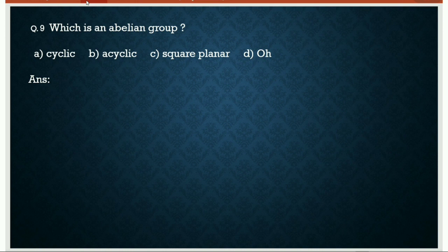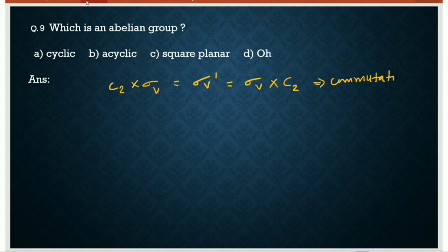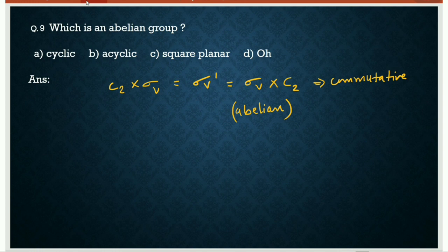Ninth question: which is an abelian group — cyclic, acyclic, square planar, or octahedral? In a symmetry point group, if operator multiplication is commutative, it is called abelian. Commutative means C2·σv = σv·C2, i.e., the order of operations does not matter. Such groups are called abelian groups.